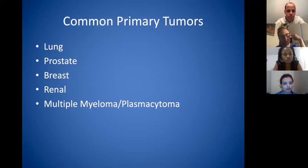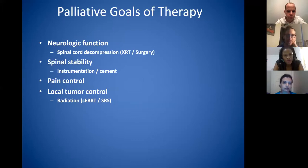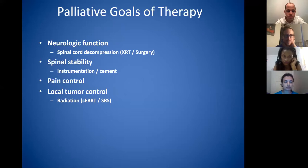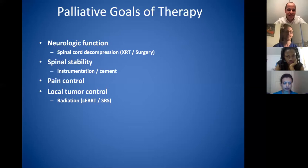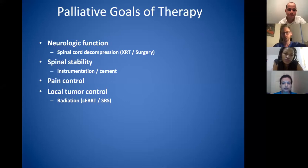The most common primary tumors are lung, prostate, breast, renal, and then multiple myeloma and plasmacytoma. The goals of therapy are palliative — you're not curing their cancer with spine metastasis surgery. Everything you do is palliative. It's important to have humility: the times I've seen spine surgery go wrong is when people try to get every last bit of tumor and the surgery is 15 hours with four liters of blood loss. That's not the right thing for the patient. Neurologic function is a key discussion point — someone who comes in weak in both legs is a very different discussion than someone with mild pain and an incidentally found metastasis.